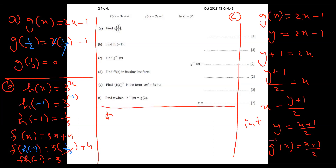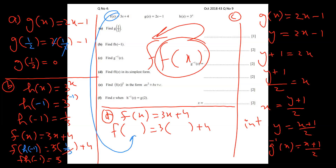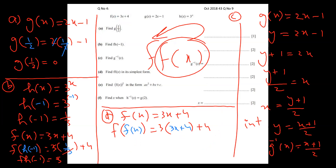Part d: find ff of x — put the function f into itself. Copy f of x, which is 3x plus 4, leave empty spaces, then put f of x as the function name and 3x plus 4 as the value. Solving gives ff of x equals 9x plus 12 plus 4, which is 9x plus 16.